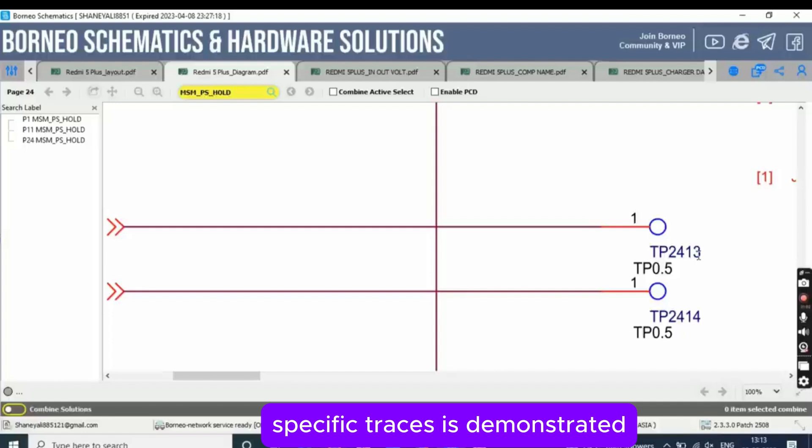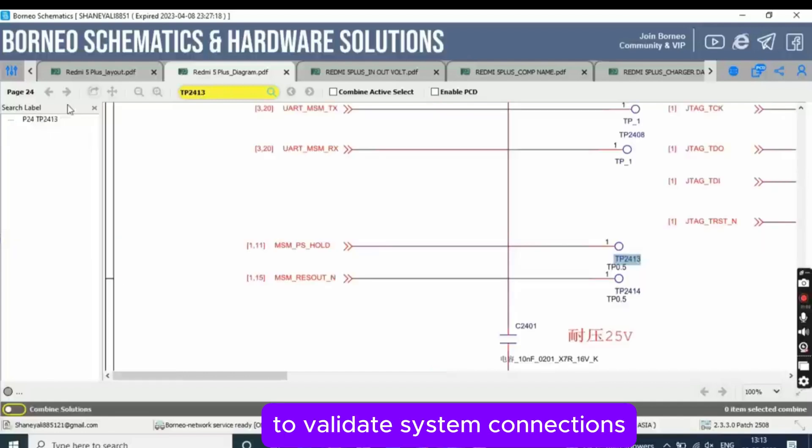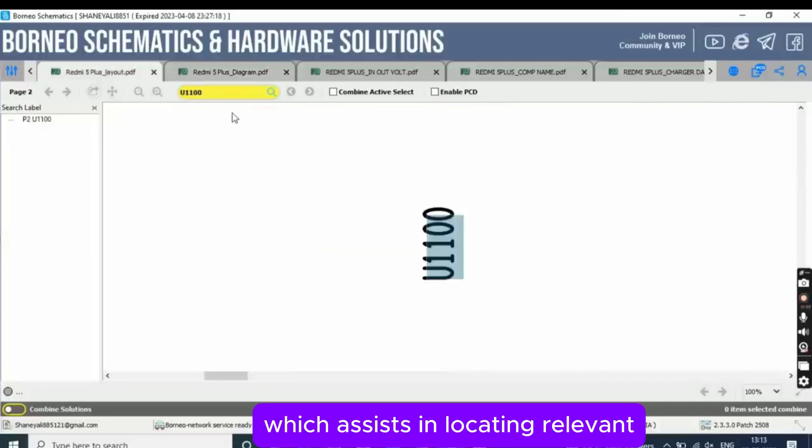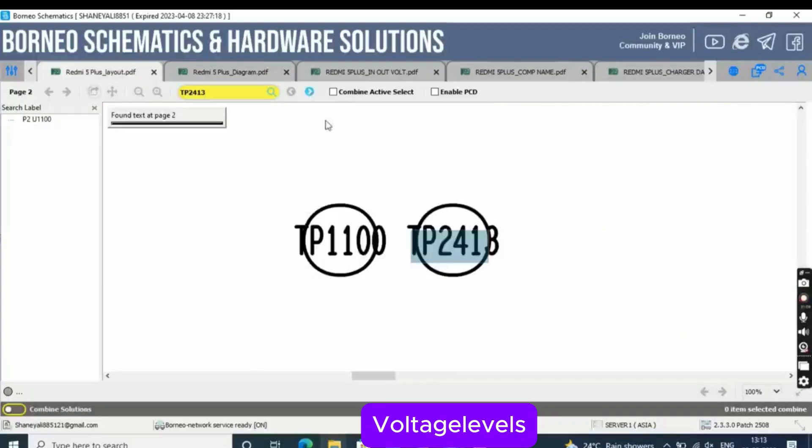The procedure for copying and pasting specific traces is demonstrated to validate system connections, which assists in locating relevant points associated with a camera connector.